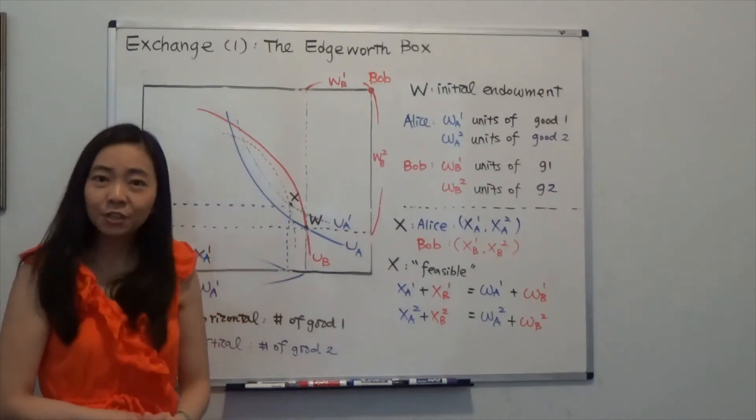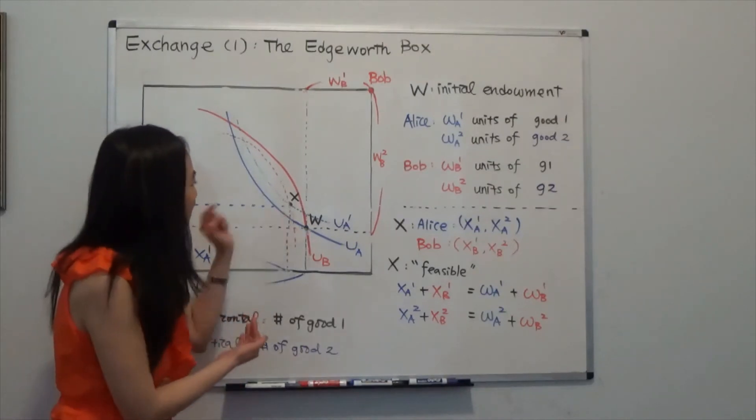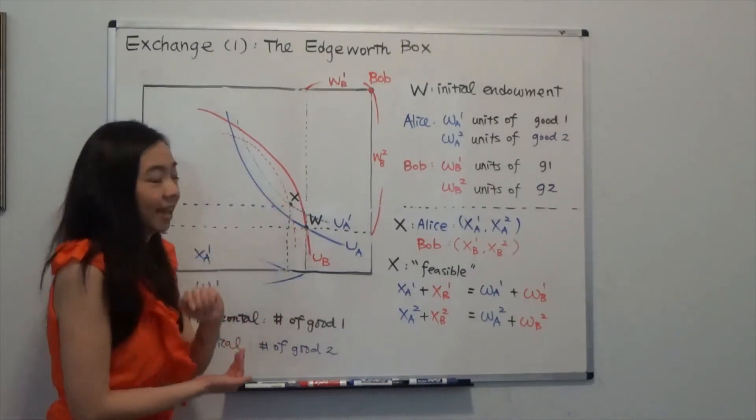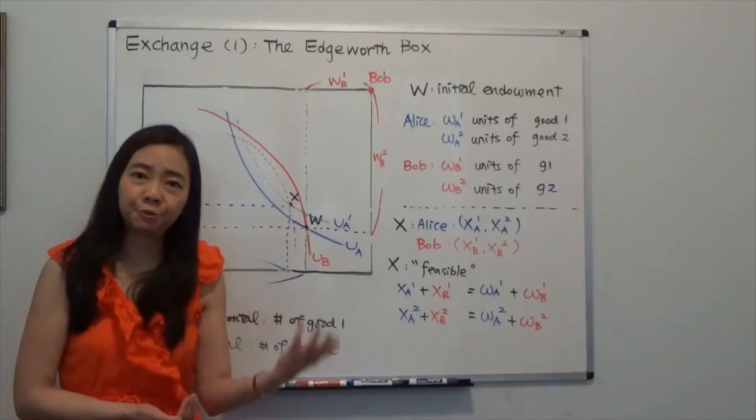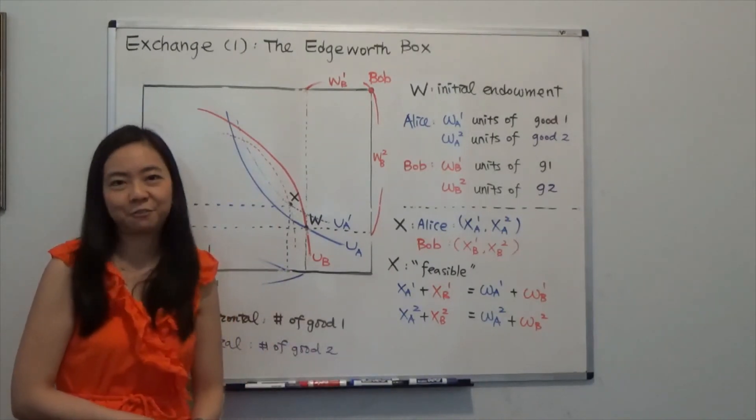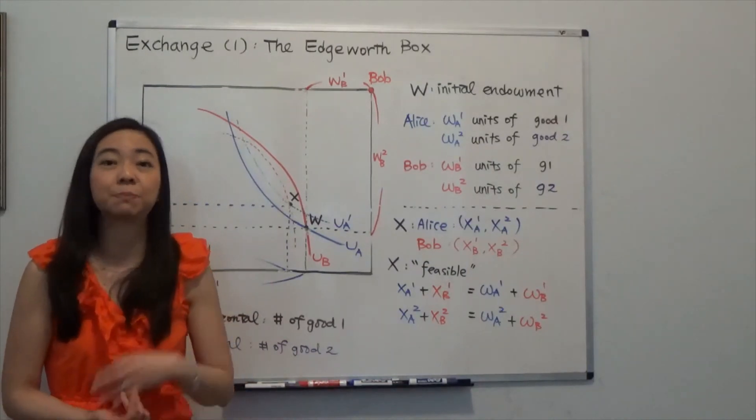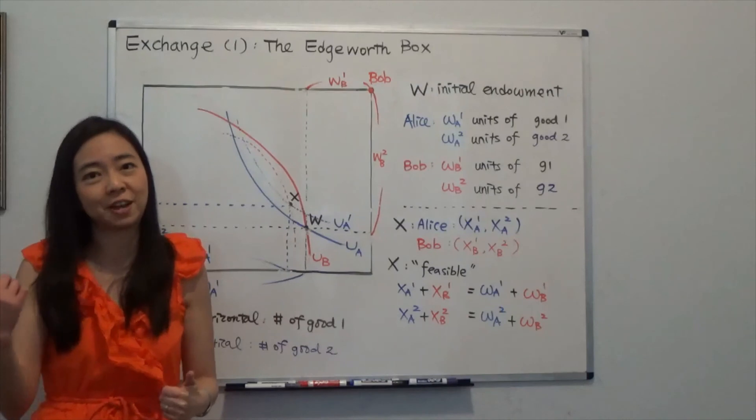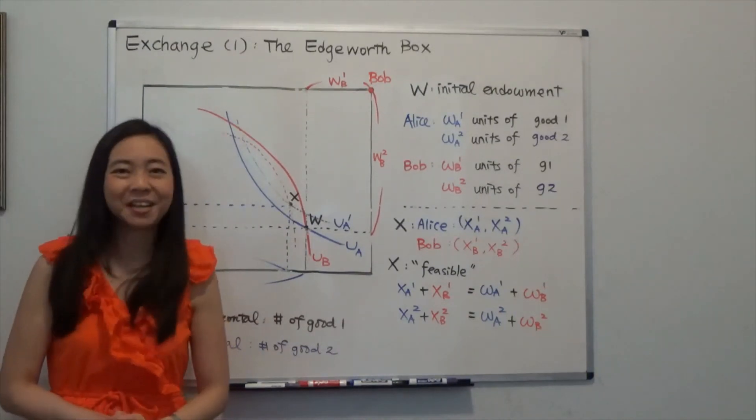And in the next video, I'm going to talk about what are the efficient points. Notice that neither W nor X are efficient because you can still improve. When you can improve, that means that's not efficient. When it's efficient, that means you cannot improve anymore. Just like when it's maximum, that means you cannot go even up. It's already maximum. So I hope this helps, and I'll see you next time.